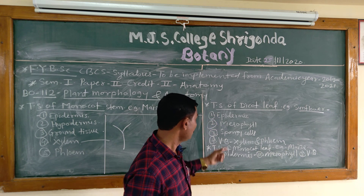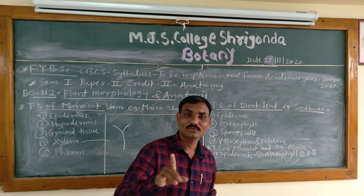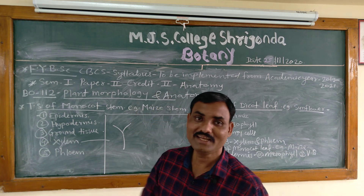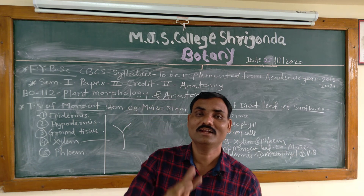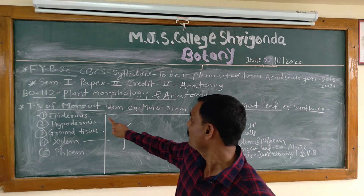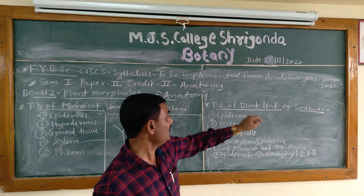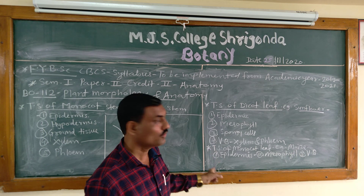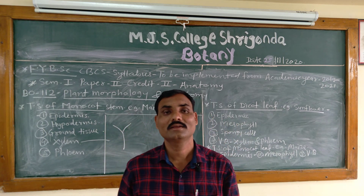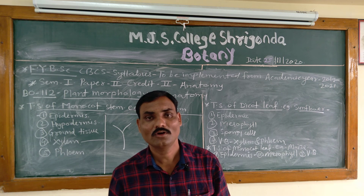In this way, we have learned about the anatomy of monocot leaf. In this video we completed the anatomy of three different organs: first, monocot stem; second, dicot leaf; and third, monocot leaf. Thank you for watching.